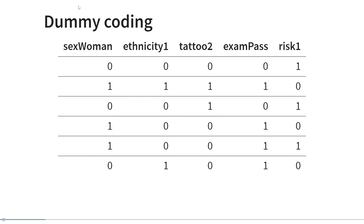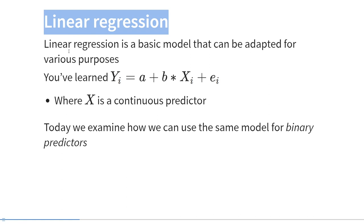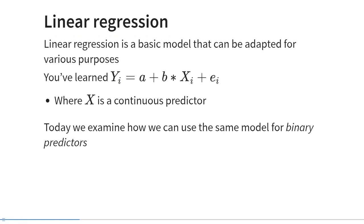There are other ways of representing binary variables in the general linear model, and students of cognitive neuroscience will go on to learn more about this. Now, let's refresh our knowledge of linear regression. Recall that the regression model represents individual values on outcome variable y as a linear function with intercept a and slope b multiplied by the individual values on predictor x, plus individual prediction errors. Until now we've assumed that x is a continuous predictor — a variable that could theoretically take any value. Today we examine how to use the same model to represent binary predictors.